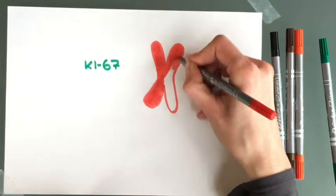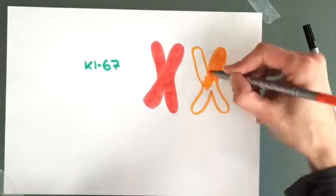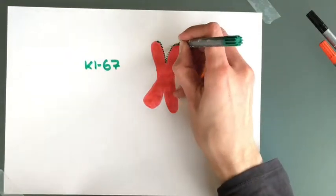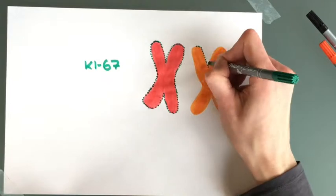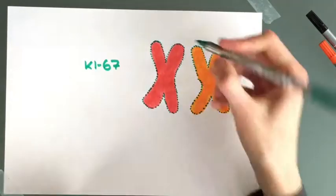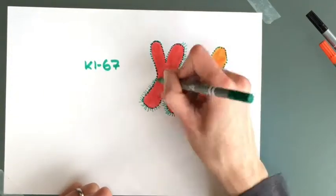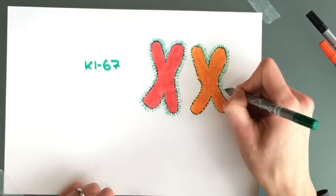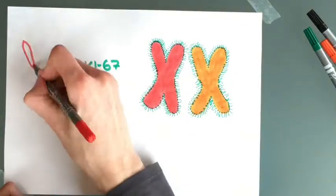We found that KI-67 binds to the surface of chromosomes at a high density and adopts an elongated shape. These KI-67 brush-like structures form a barrier on chromosomes that prevents close contact with neighboring chromosomes.